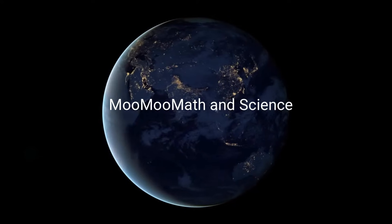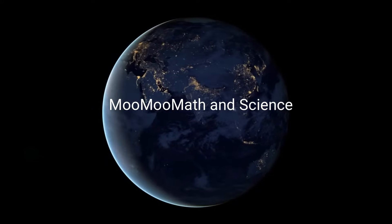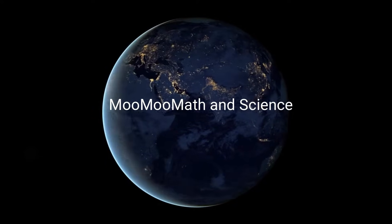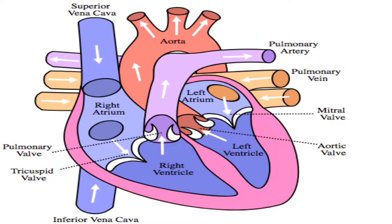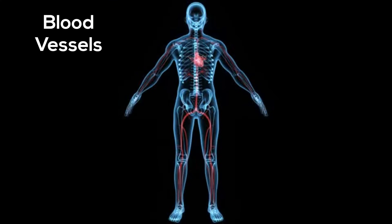Welcome to Moo Moo Math and Science. In this video you will learn about the circulatory system. The circulatory system is the transportation system of the body. The major structures that make this possible are the heart, blood vessels, and blood.